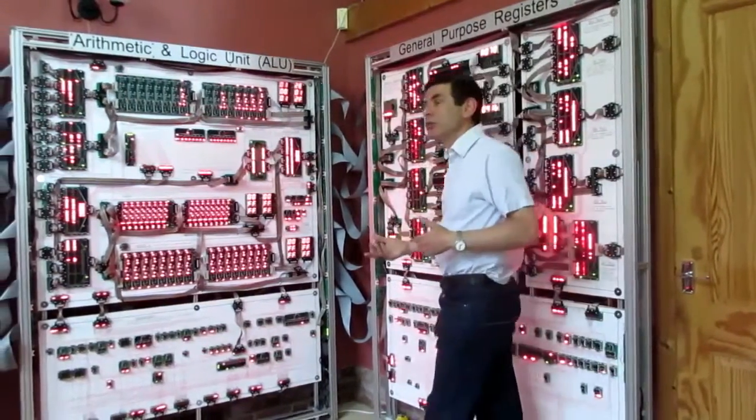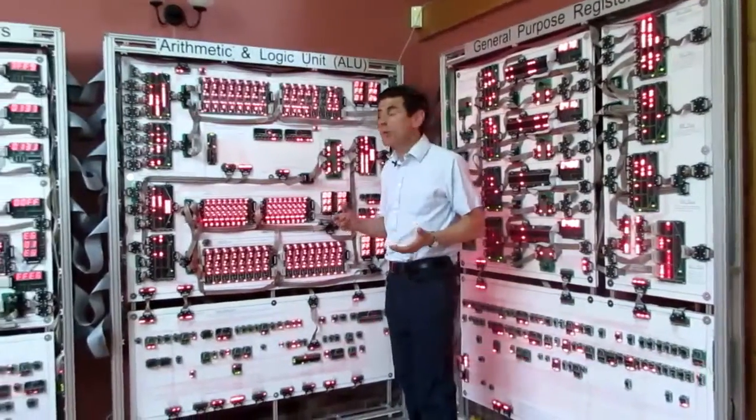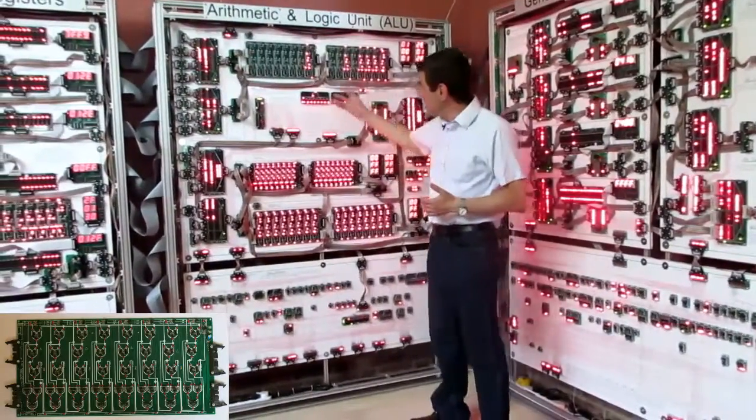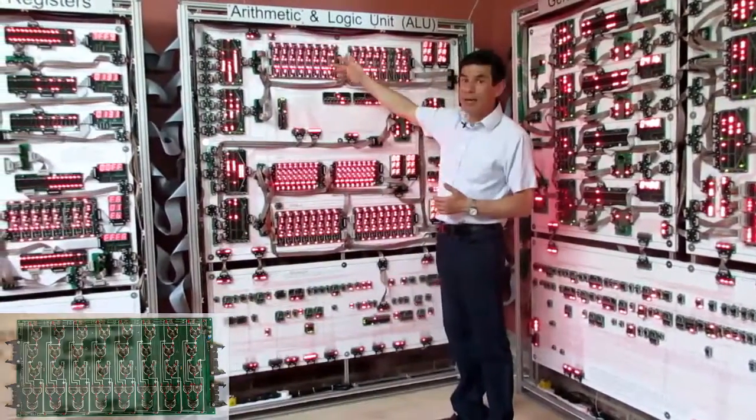The next main functional block in the processor is the ALU, which carries out all of the arithmetic and logic functions. This is the main ALU, and we have a second adder up here.